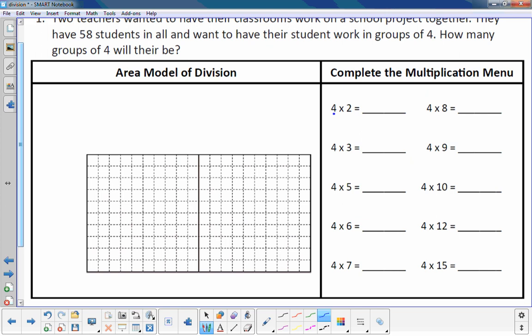So I have my students fill out the multiplication menu first. And it's four. It's going to be multiples of four because the four represents how many students are in a group. And the number on the right tells us how many groups there are. So it'd be four students in two groups. That would be eight total students. Four students in three groups. So that would be 12 total students. Four students in five groups. That would be 20 total students.